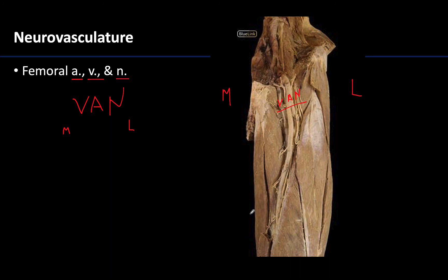Note that these are the muscles of the anterior compartment of the thigh, but from this anterior view you can also clearly see some muscles of the medial or adductor compartment, which will be discussed in the upcoming video. So from an anterior view you have two different compartments visible. Excellent - thank you for your time and attention, and I hope you have a great rest of your day.